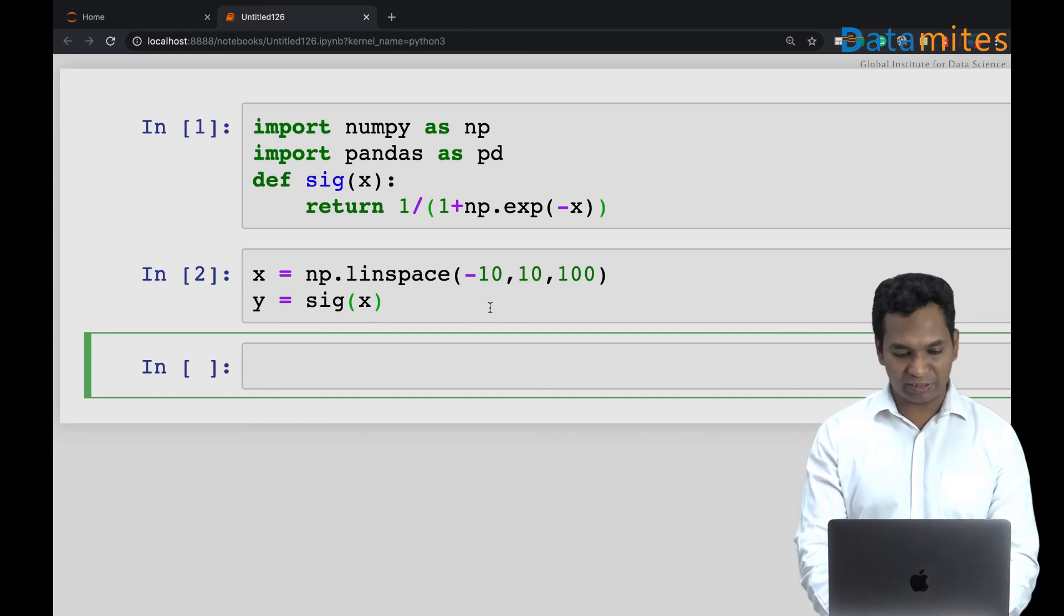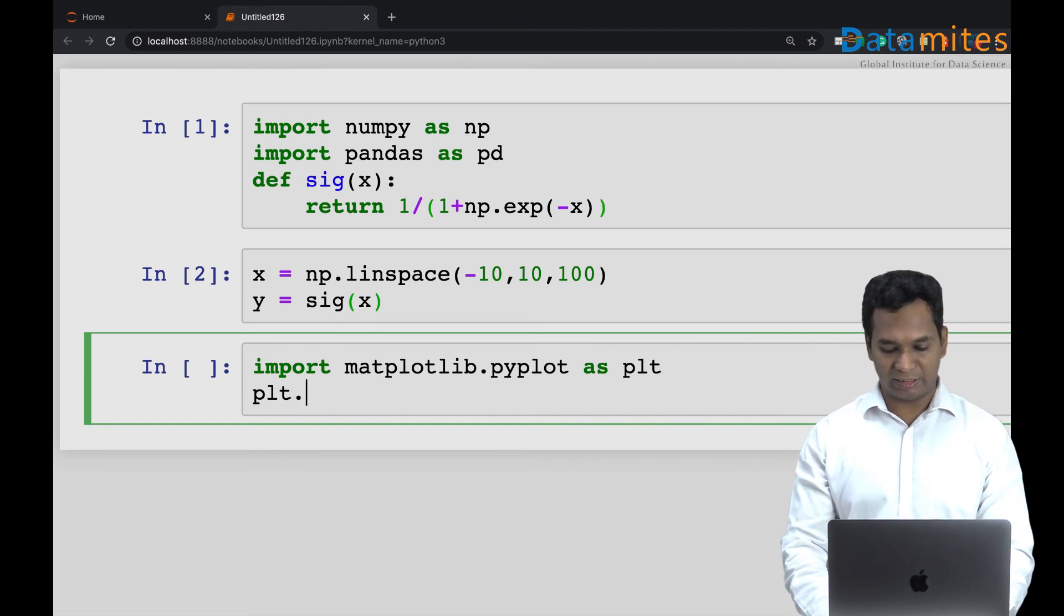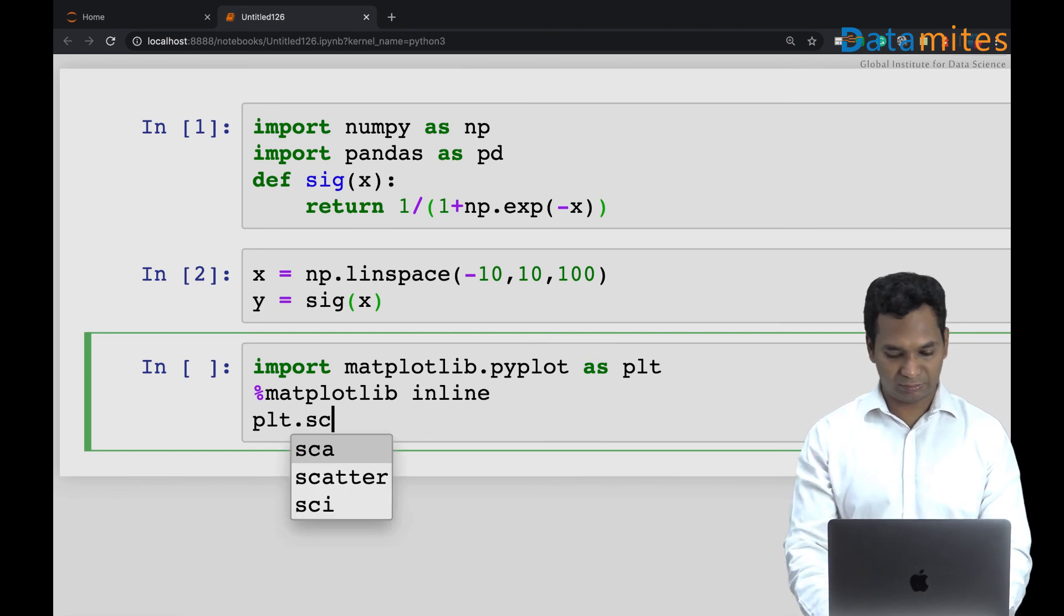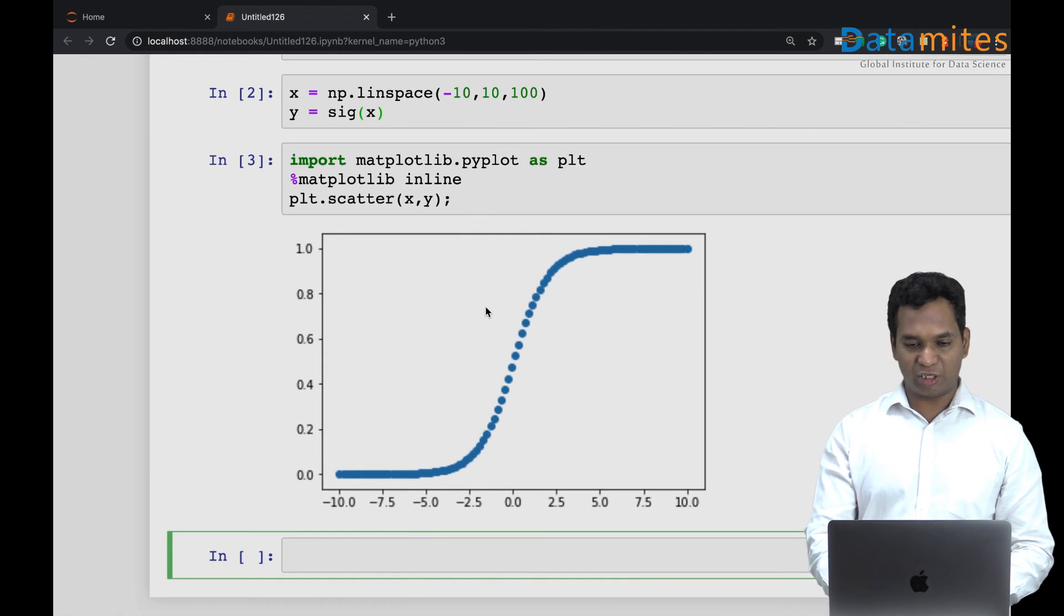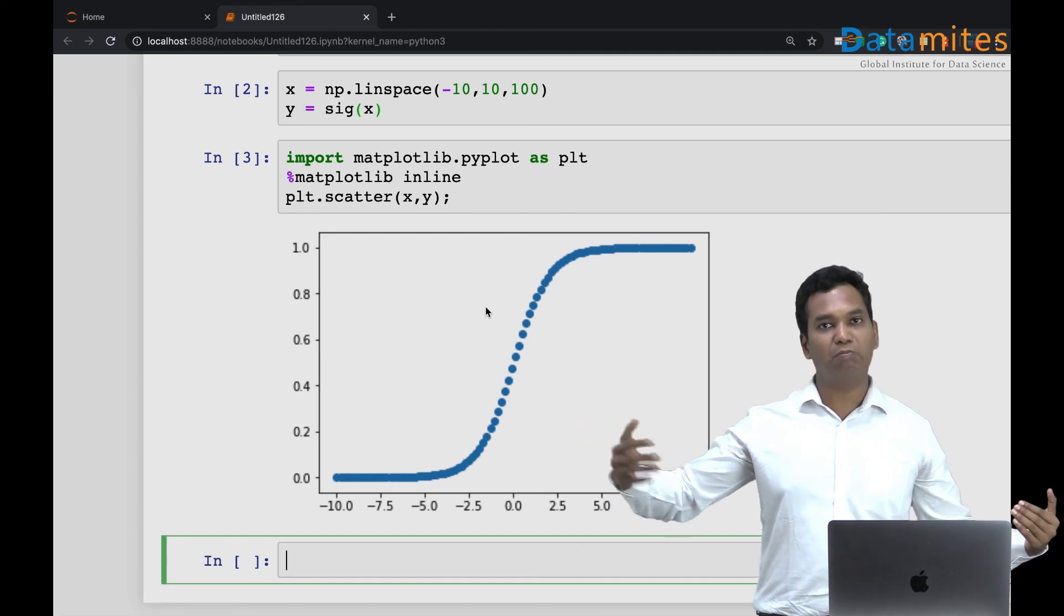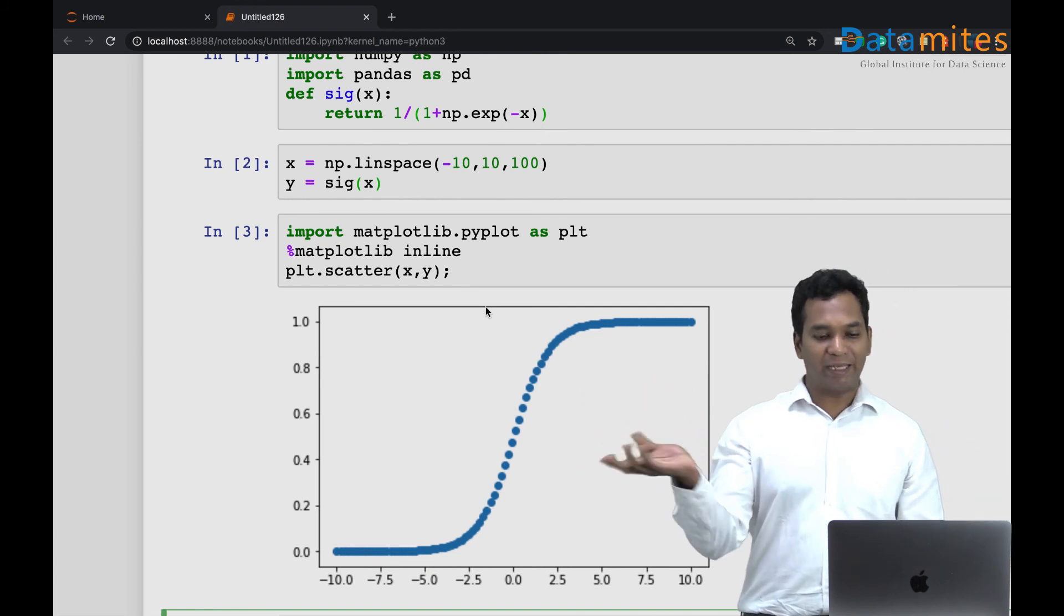And x I'm going to simply plot it. From matplotlib, matplotlib.pyplot as plt. I can do scatter plotting, x comma y. So that's your sigmoid curve. We essentially taken the x input values from minus 10 to plus 10, passed it to the sigmoid function which is defined over there, and it's plotted into an S-curve. It's pretty few lines of code.